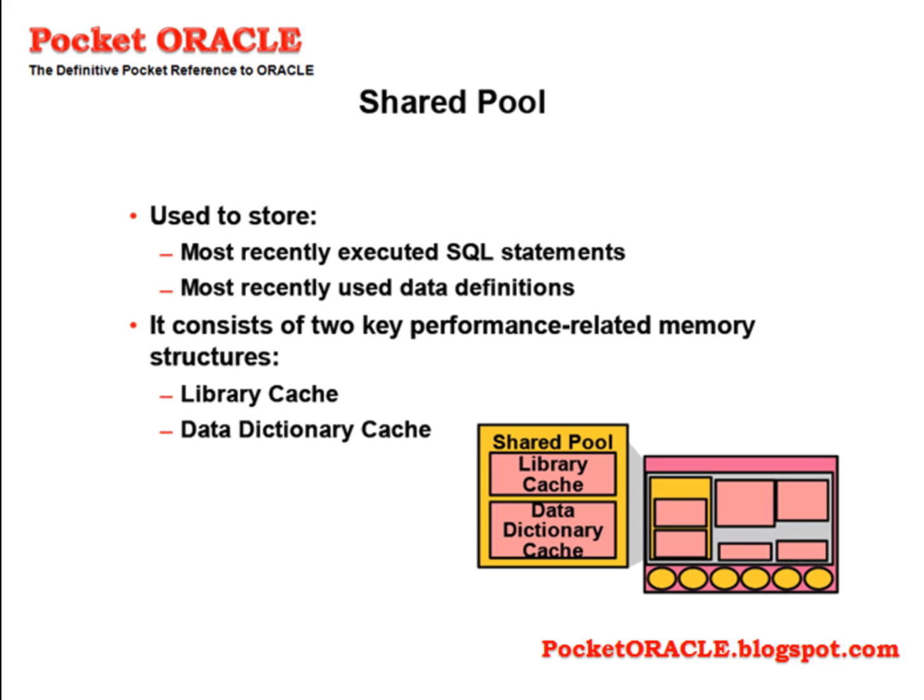The data dictionary cache stores recently used object definitions — descriptions of tables, indexes, users, and other metadata definitions. Keeping such definitions in memory, rather than having to read them repeatedly from the data dictionary on disk, enhances performance.